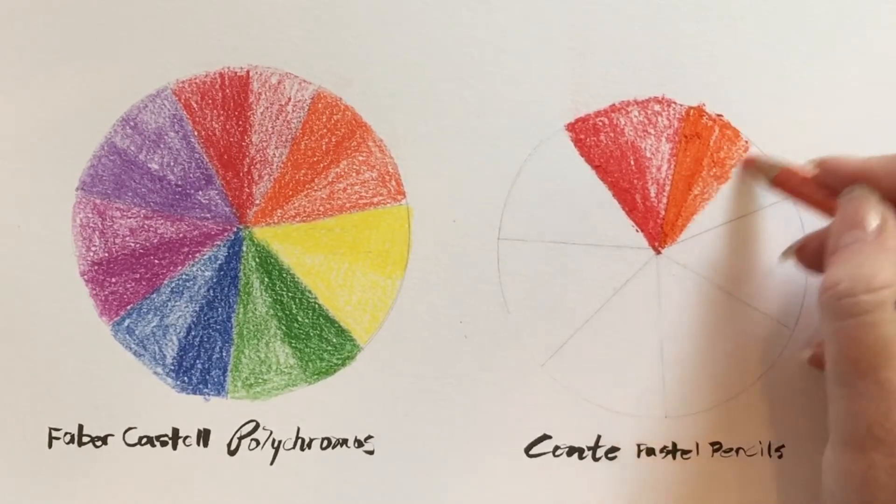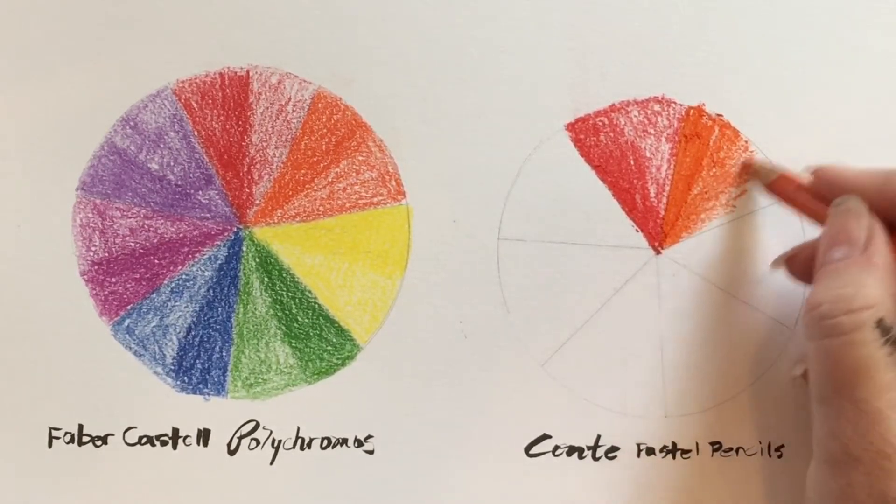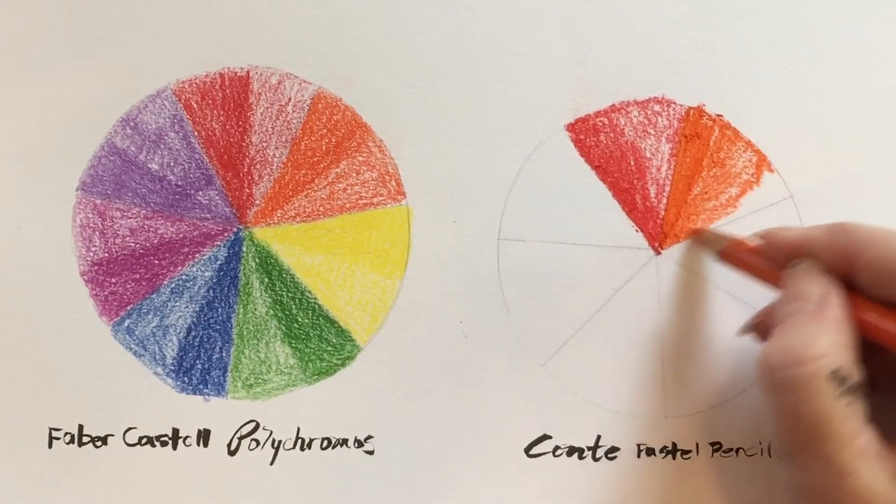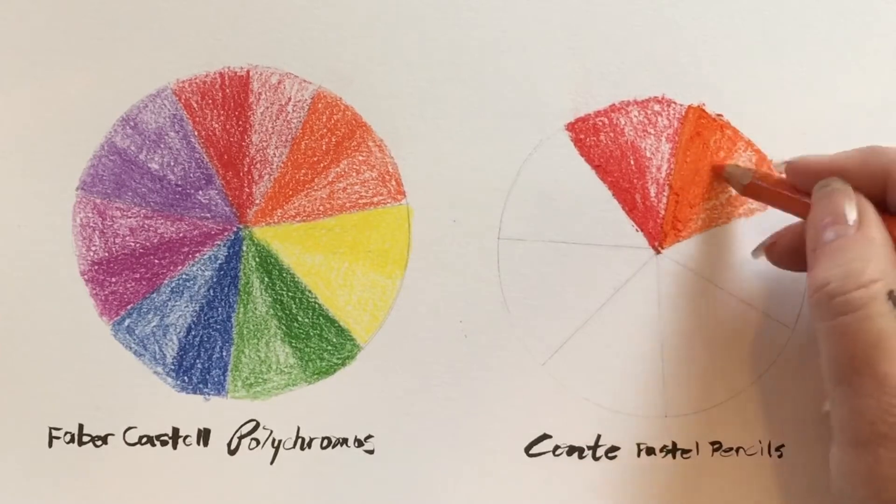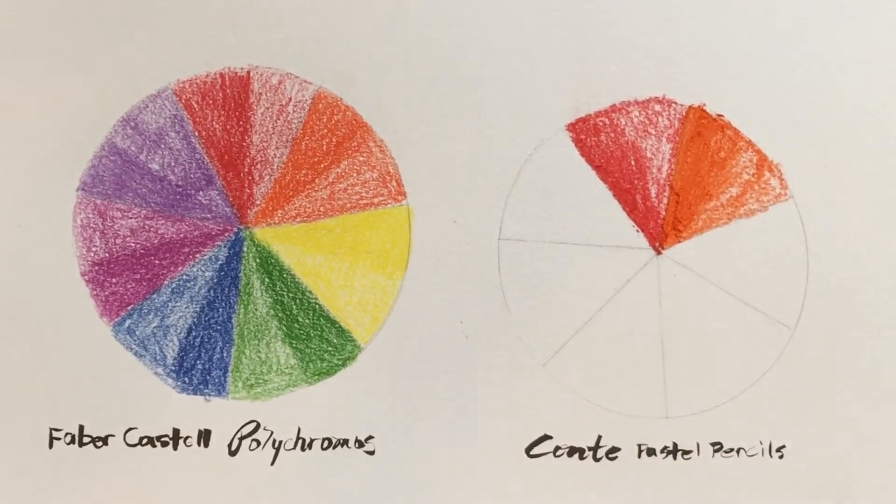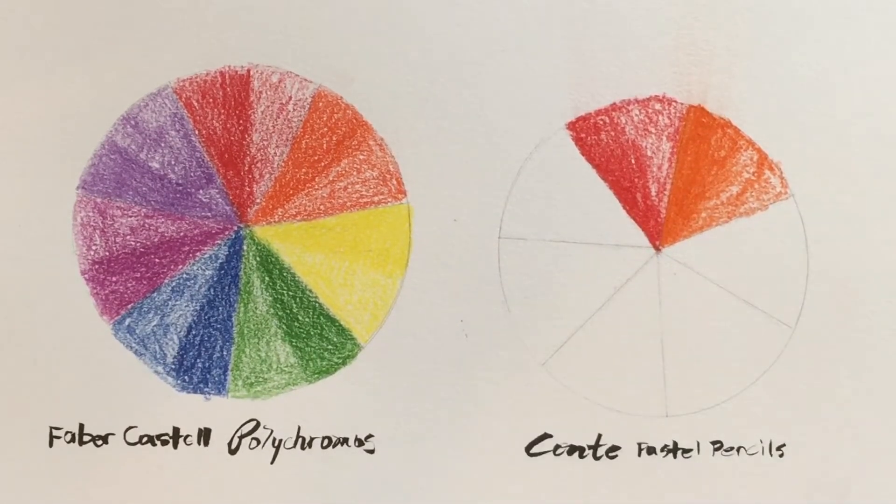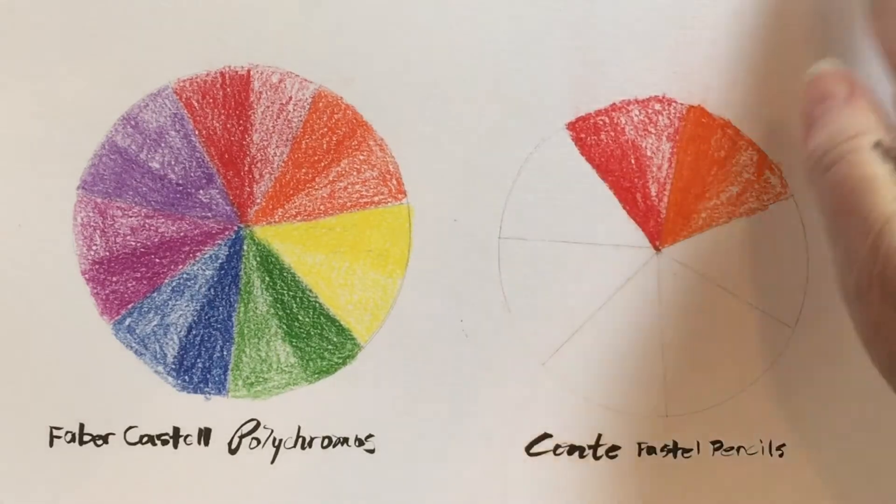I'm doing this side a little bit different because the pencils are telling me what to do. It's much easier to just go from very intense color to much lighter color. You can see a little bit of dust there.